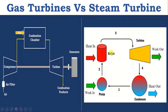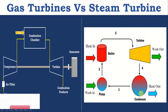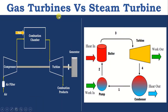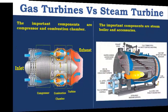Vapor phase from Boiler to Condenser, liquid phase from Condenser to Boiler. The thermodynamic cycle that operates under Gas Turbine Engine is known as Gas Power Cycles, whereas the thermodynamic cycle that operates under Steam Turbine Engines is known as Vapor Power Cycles. Now let's discuss the difference between Gas Turbine Engine and Steam Turbine Engine.